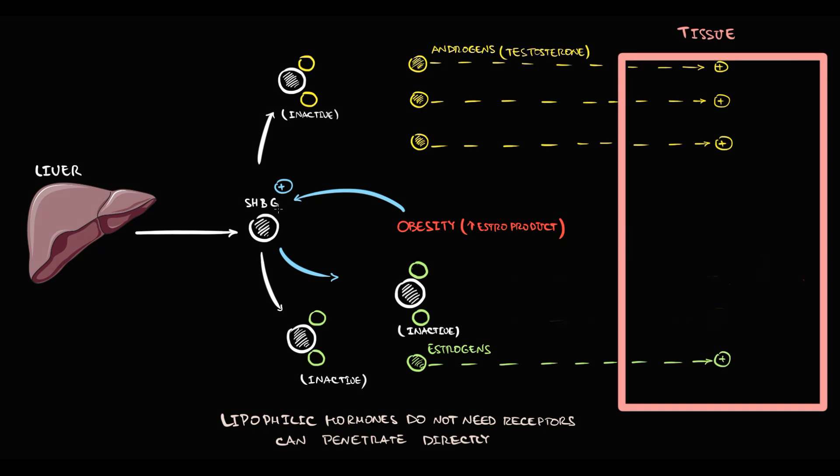So in mild obesity, person has increased level of estrogens, increased sex hormone binding globulin, free androgens are normal, initially free estrogens are normal, but the level of binded estrogens is high.